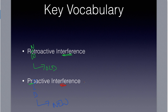So if it's interference, we're talking about memory — it's interfering with your memory. Just write it out on the margins during a test: old information interferes with new for proactive, and new information interferes with old for retroactive. You shouldn't have any problem remembering this.